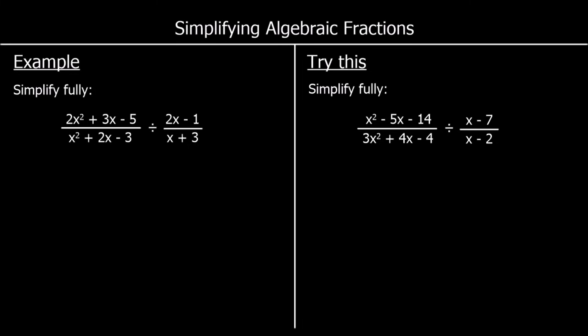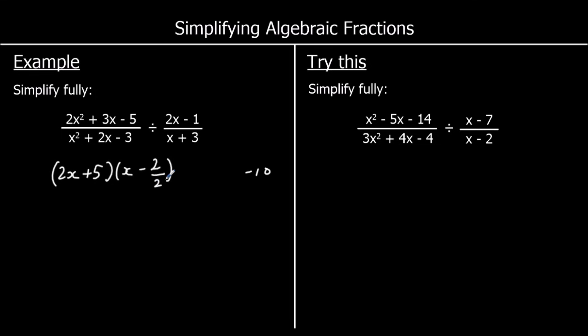And one more example. This time we've got a division. We can factorise first or deal with the division first — it doesn't matter which way round you do it. I'm going to factorise first. For the top, I'll use a times c, which gives negative 10. I've got 2x in one bracket and x in the other, with over 2. What multiplies to make negative 10 and adds to make 3? It's plus 5 and minus 2. I'll write the 2 over the 2 because I know that will cancel, since 2 is a multiple of 2.